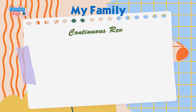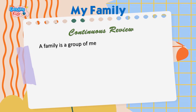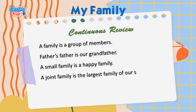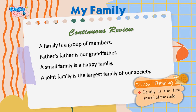Continuous review: A family is a group of members. Father's father is our grandfather. A small family is a happy family. A joint family is the largest family of our society. Critical thinking: Family is the first school of the child.